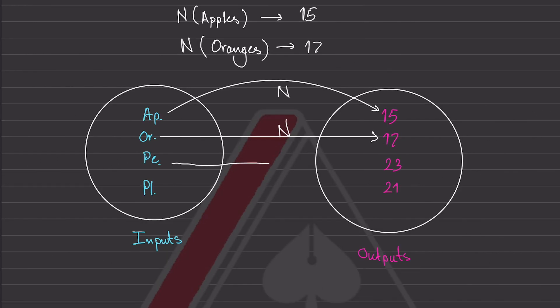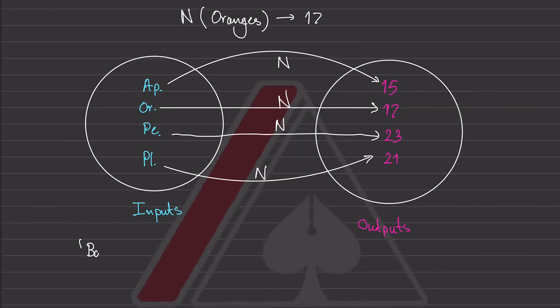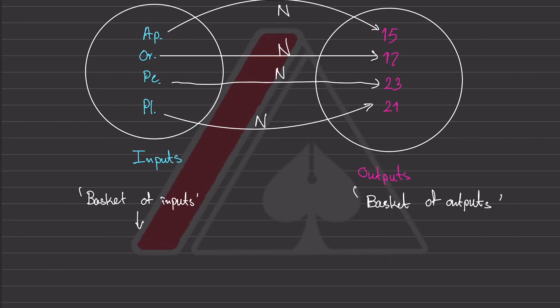And so as we go further down the line, we will see that these baskets, basket of inputs and this basket of outputs will be very common. And since they're so common, what we did was we decided to name them. This basket of inputs is called your domain, whereas this basket of outputs is called your range or the set.